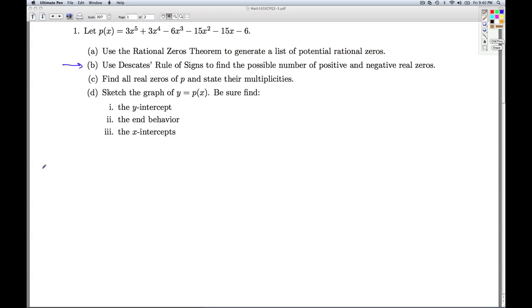Part B, we're asked to use Descartes' rule of signs to find the possible number of positive and negative real zeros. So if we look at the possible number of positive real zeros, we look at the variations in sign of the polynomial P(x). So we start off with a positive 3, then a positive 3, then a negative 6, a negative 15, a negative 15, a negative 6. So these are the signs of the coefficients, and I detect only one variation in sign.